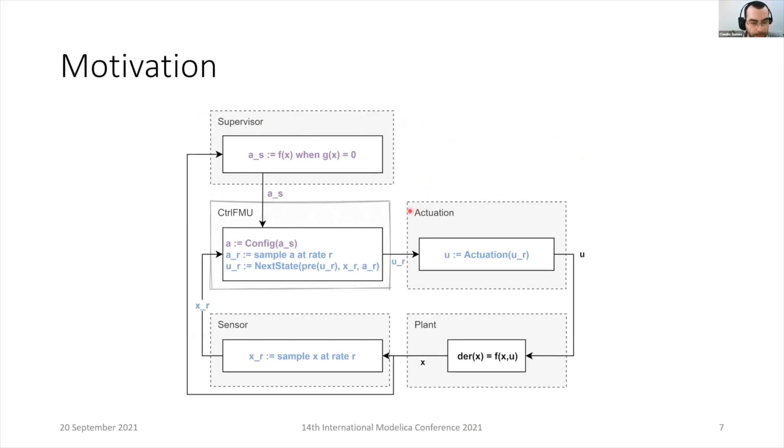Every few seconds at some rate, we want our controller to sample the plant, carry out some action, pass it to the actuation layer, which then computes the actuation on the plant.